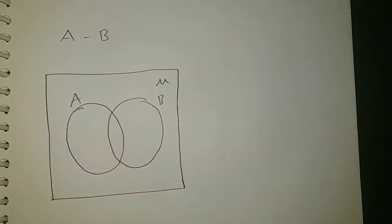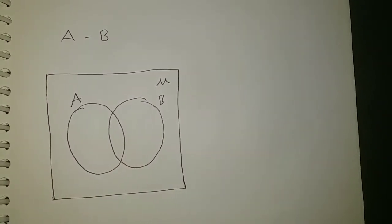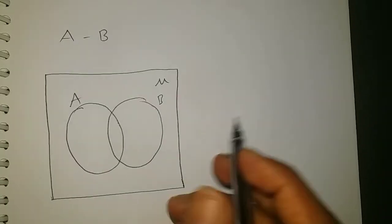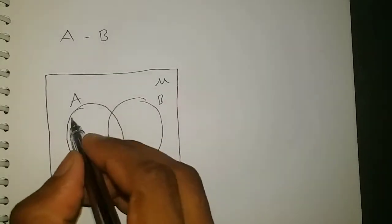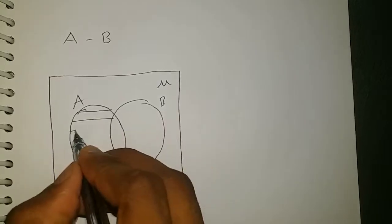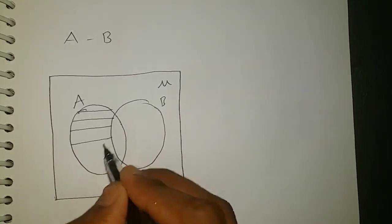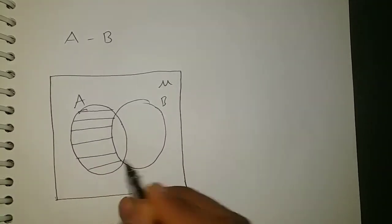From the set A, we will remove all the elements which are there in B. It means we should not do anything with set B. This is A minus B.